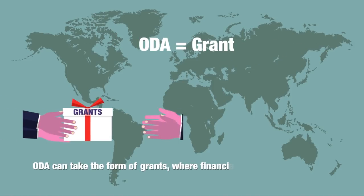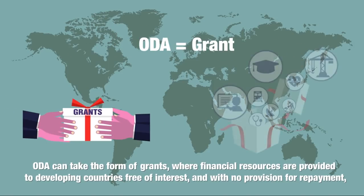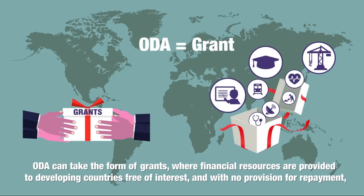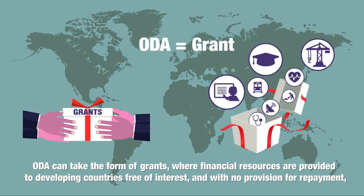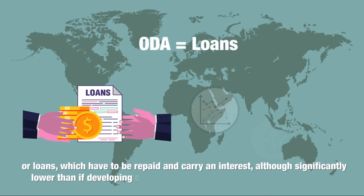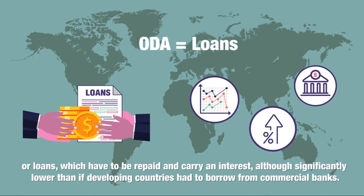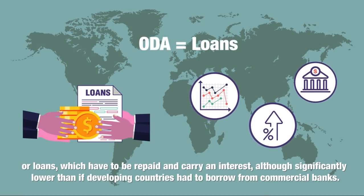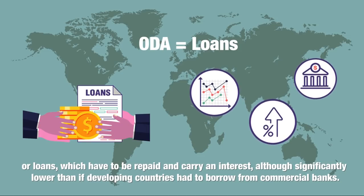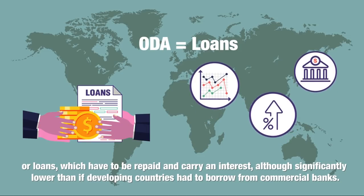ODA can take the form of grants, where financial resources are provided to developing countries free of interest and with no provision for repayment, or loans, which have to be repaid and carry an interest, although significantly lower than if developing countries had to borrow from commercial banks.